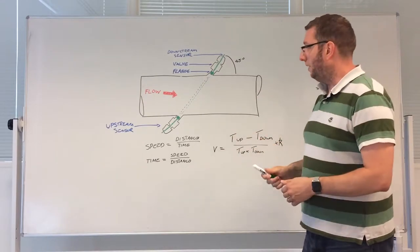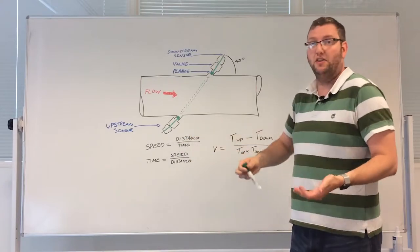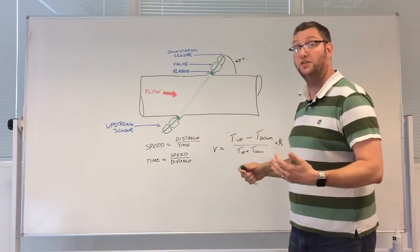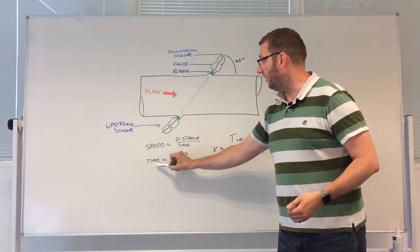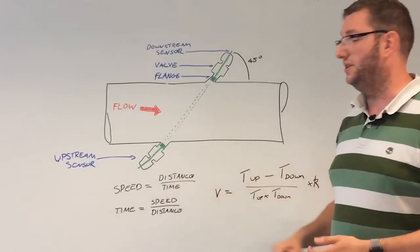From there on we need to apply some maths. So speed equals distance over time is one that we probably all learnt at school, and we know that we can rearrange that so that a time of flight is speed over distance.